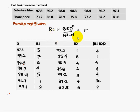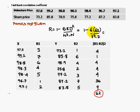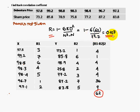The rank correlation coefficient formula is: r = 1 minus (6 × Σd²) / (n³ − n). Here, Σd² is the summation of the D² column, which equals 62. With n = 7, compute 6 × 62 divided by (7³ − 7). Simplifying gives r = 0.107, meaning a positive correlation exists.